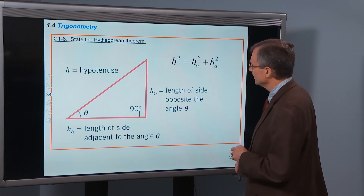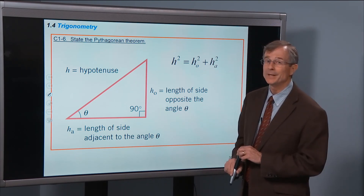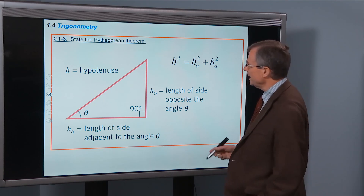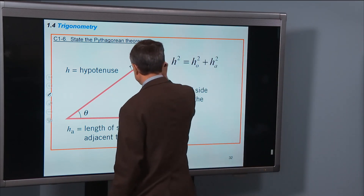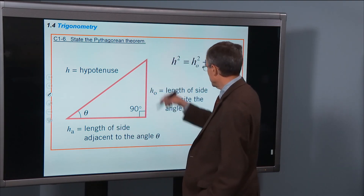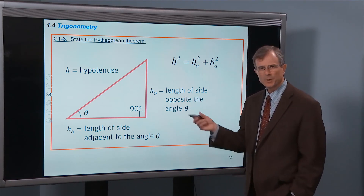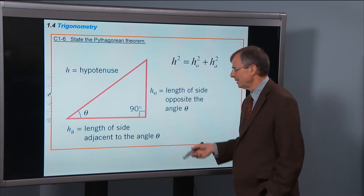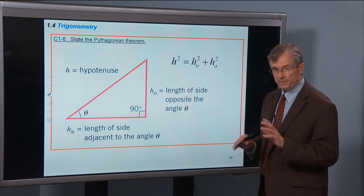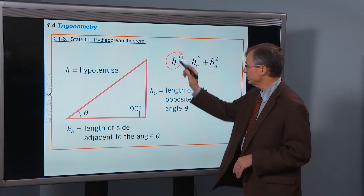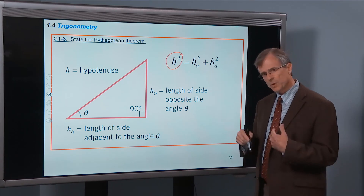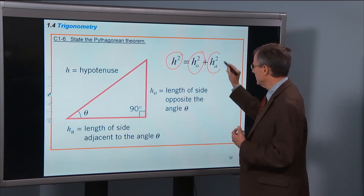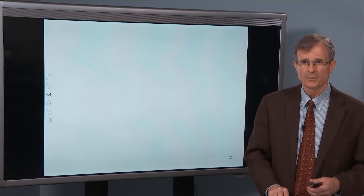The Pythagorean theorem: Pythagoras came up with the relationship between the hypotenuse H, the side adjacent, and the side opposite. Some of you have seen it as A squared plus B squared equals C squared. The important thing is to remember that you square the hypotenuse, and that equals the sum of the squares of the other two sides of the triangle: side opposite squared plus side adjacent squared equals hypotenuse squared.